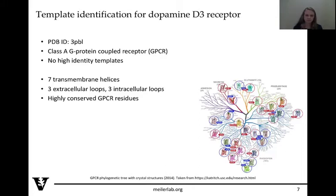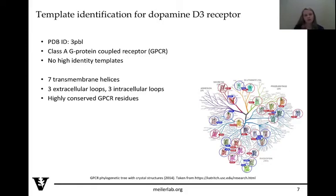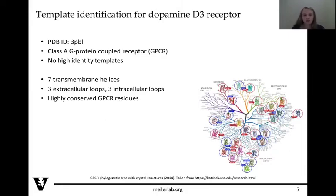We're modeling the dopamine D3 receptor, which is a class A G protein-coupled receptor. For those familiar with GPCRs, there are different classes and within those classes, different families of receptors. What's known about GPCRs is that they have seven transmembrane helices, three extracellular and three intracellular loops, with highly conserved residues across the entire family and especially across class A receptors. You can use this background information to help decide on which templates to use.